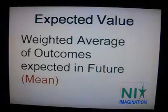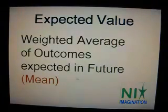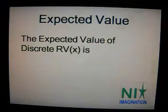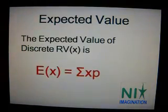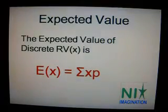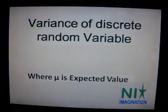What is expected value? It is the weighted average of outcomes expected in the future — which means it is the mean. Expected value of a discrete random variable x is the summation of random variable x multiplied by the probability. That is the formula.